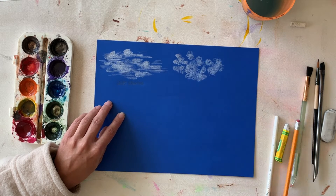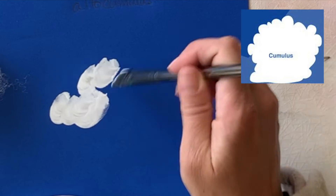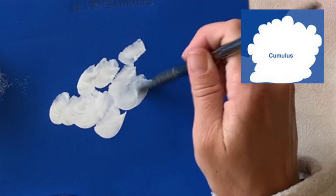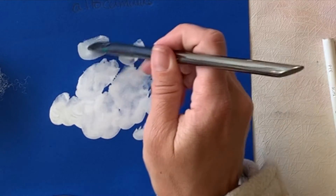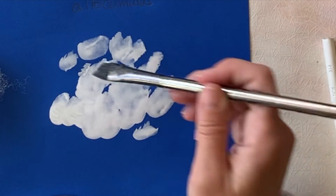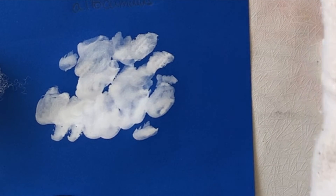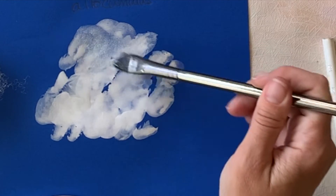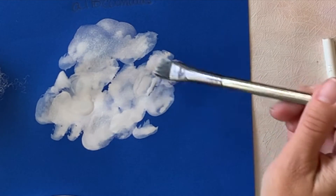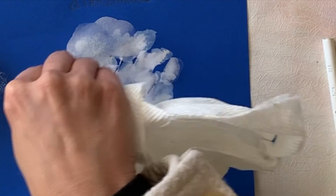If you're working with watercolor on white paper, you'll need to use wax resist or lifting wet methods since watercolor has no white paint. Here I'm using white acrylic paint with some water added, making the cumulus cloud. Cumulus clouds are puffy and stand out vividly against the blue sky, so I'm using my brush in a round-and-round motion followed by some lifting wet.